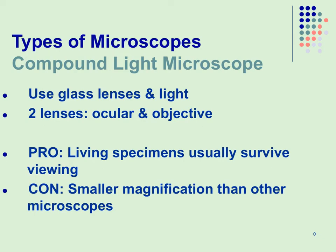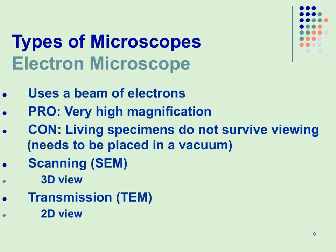Two types of microscopes: the compound light microscope, which is what you'll use in biology classes in high school and college. Its benefits are that it is generally non-harmful to specimens — typically no loss of life unless you keep them on the slide too long and the light cooks them. The con is that it has smaller magnification and less detail than the electron microscope. For the electron microscope, there are two types: the scanning electron microscope, which creates a 3D image, and the transmission electron microscope, which produces a 2D image and has less detail than the scanning electron microscope.